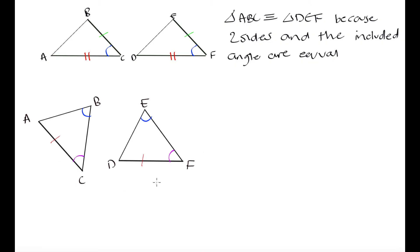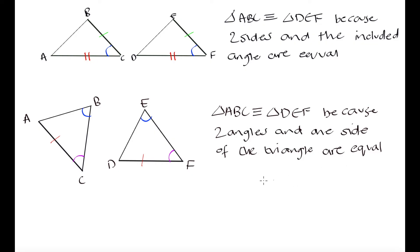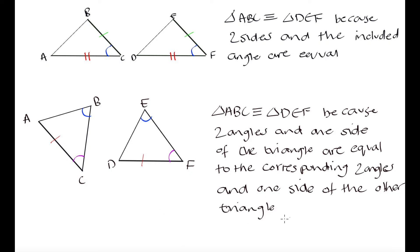Our last rule is the angle-angle-side rule. If we have two angles and one side that are equal to the two corresponding angles and one corresponding side of the other triangle, the triangles are congruent. If we rotate one of these triangles slightly, we can see that angle B equals angle E, angle C equals angle F, and side AC equals side DF. So triangle ABC is congruent to triangle DEF because two angles and one side are equal to the corresponding two angles and one side of the other triangle.